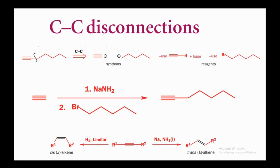For C–C disconnections: given an alkyne and an alkyl chain, disconnect the C–C bond to generate acetylene (ethyne) as a nucleophilic compound and a positive charge on the other carbon equivalent to an alkyl halide. Sodium amide deprotonates the acidic terminal hydrogen of acetylene, generating a negative charge that attacks the alkyl halide in SN2 fashion. For selectivity: if you want a cis (Z) alkene from the alkyne, use Lindlar's catalyst with H2/Pd. If you want a trans (E) alkene, use sodium in liquid ammonia.